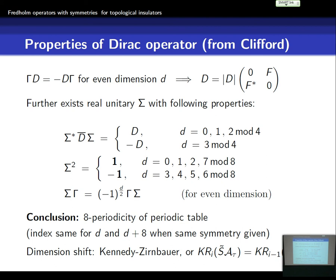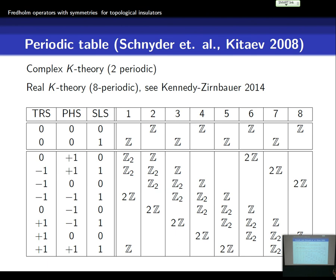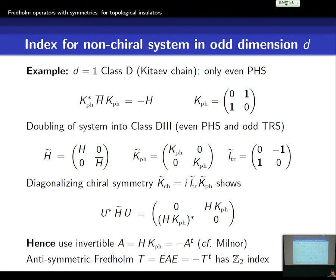There's one thing I want to stress. If you look at the Z2 entries in odd dimensions where there's no chiral symmetry, then at the beginning I said without chiral symmetry in odd dimensions I don't even have an invertible operator at my disposal. This happens in every odd dimension — there's one Z2 where there's no chiral symmetry and hence no invertible operator available. What one should do is to double these systems into the neighboring class with Z2 and then reduce them out, and that gives the appropriate operator. This is illustrated in dimension one, which corresponds to the Z2 appearing in the Kitaev chain, mentioned yesterday.